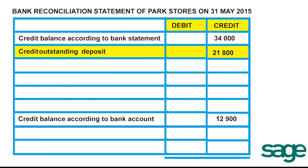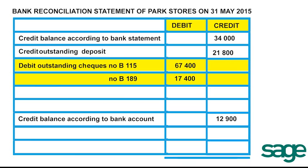The following cheques were issued and recorded in the cash payments journal, but the recipients had not cashed them yet: cheque number B115 for R67,400 and cheque number B189 for R17,400. Because the recipients have not cashed them, the bank does not know about them yet. Therefore they are outstanding in the bank's records, and we put them into the bank reconciliation as a debit to decrease our bank records with the outstanding cheques.